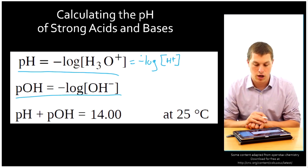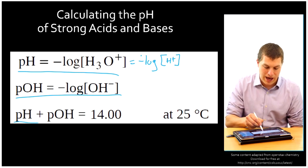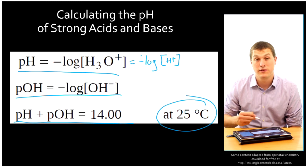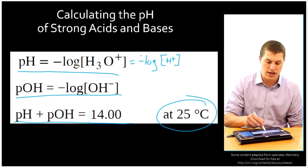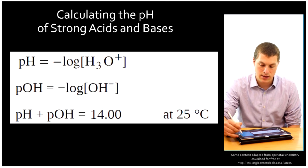pOH is just the negative log of OH-. P actually just means negative log. And then you'll notice if we add pH and pOH up, we'll get 14. That's true at 25 degrees Celsius. So if you change the temperature, you change what they add up to. All right, let's go ahead and do a problem with these equations.